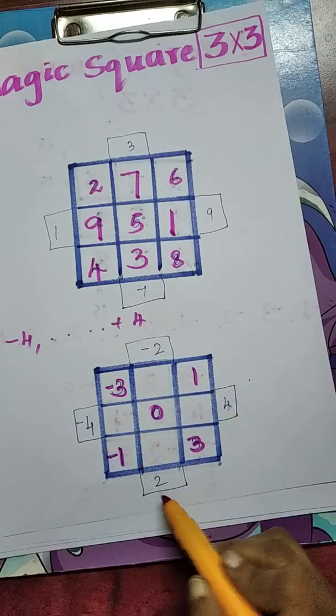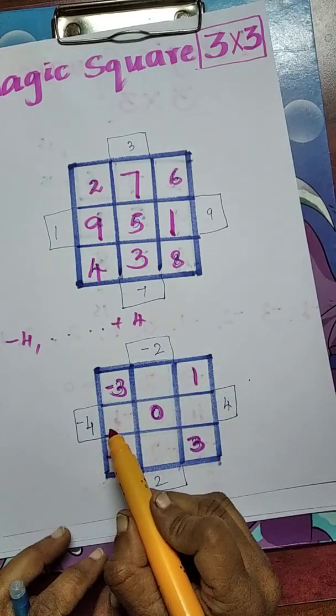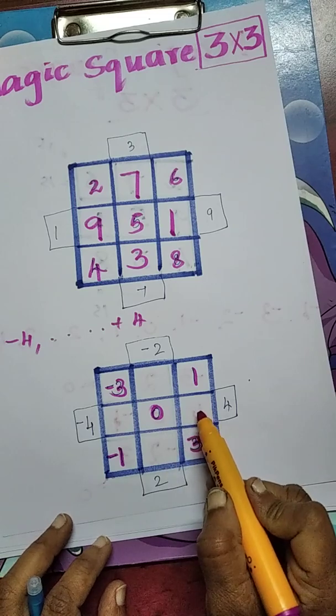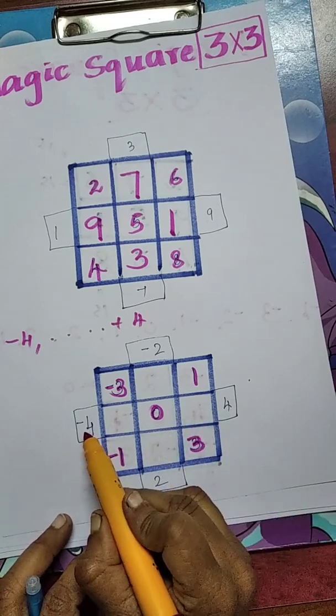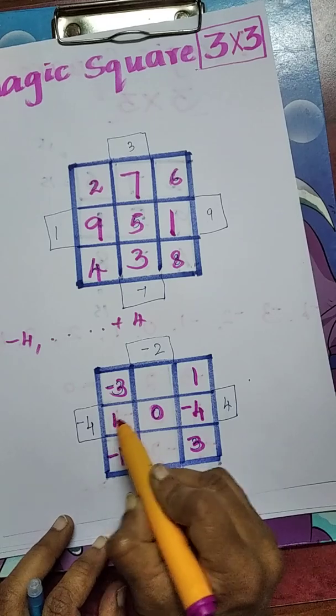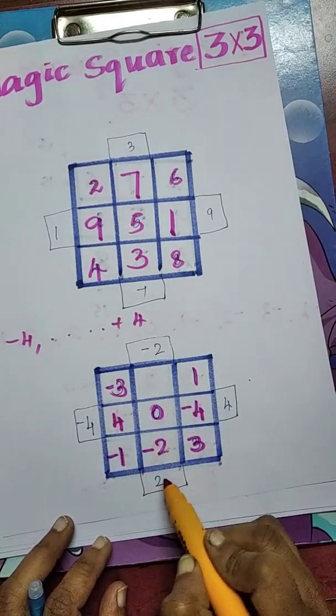Minus 4, minus 2, 2, and 4. So, avoid adjacent box and go to next box. That is minus 4. Here, 4, minus 2, and 2.